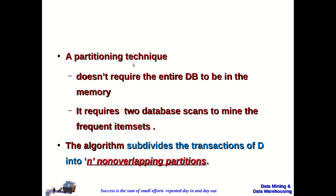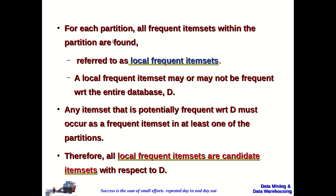A partitioning technique does not require the entire database to be in main memory and requires only two database scans to mine frequent item sets. The algorithm divides the transaction database into N number of non-overlapping partitions, assumed to contain a reasonably small number of item sets, so we can read the whole database once to count support. For each partition, all frequent item sets within the partition are found and called local frequent item sets. A local frequent item set may or may not be frequent with respect to the entire transaction database.